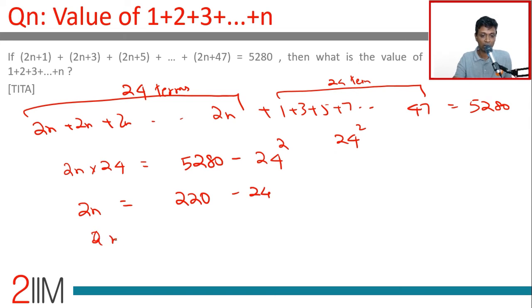Or n equals 110 minus 12. 110 minus 12 is 98. 1+2+3+4 till n is n(n+1)/2.